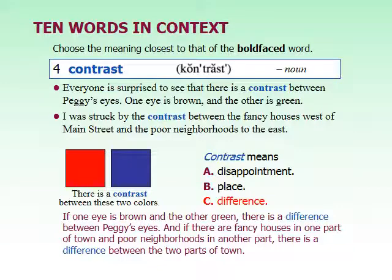One thing to notice is that contrast is often followed by 'between,' as in both of these examples. Contrast means you're comparing two different things and focusing on how they're different. You can see the contrast between the two colors in the picture — one is red and one is blue. Some of you may have studied a compare and contrast paragraph, where compare talks about similarities and contrast talks about differences.